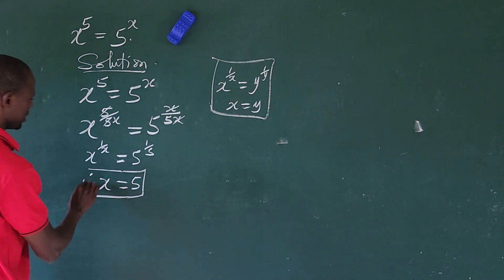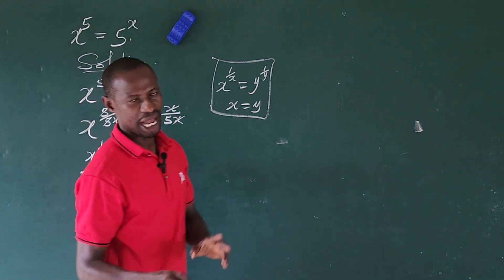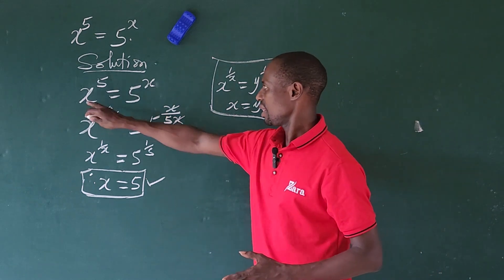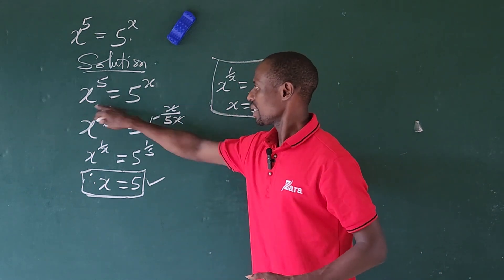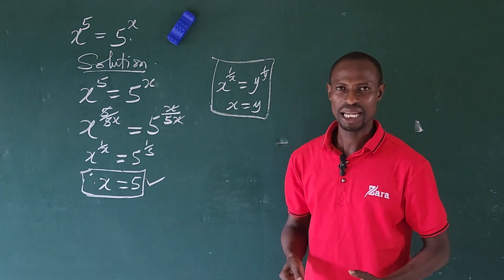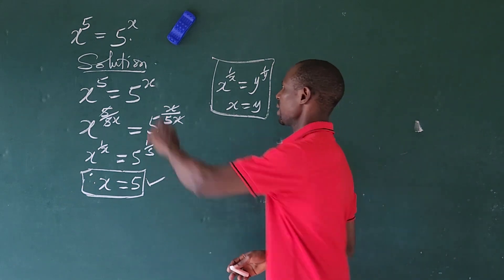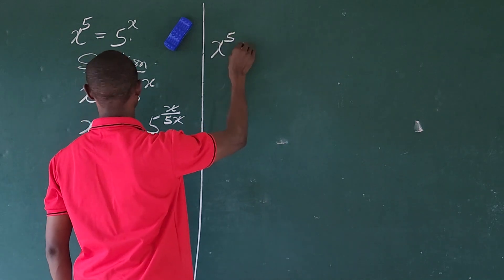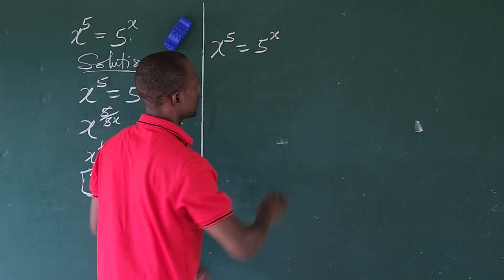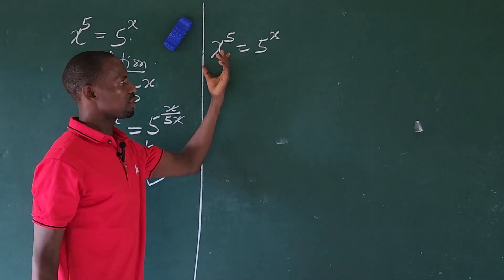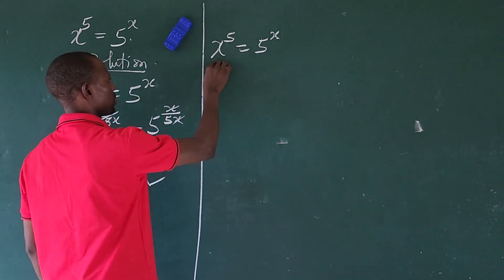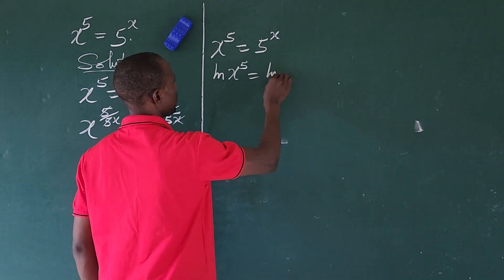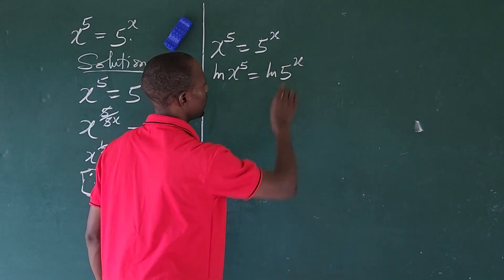Now for the second approach: I want to start by taking the natural log of both sides. So the question again is x to the power of 5 equal to 5 to the power of x. Taking ln of both sides gives us ln of x to the power of 5 equals ln of 5 to the power of x.